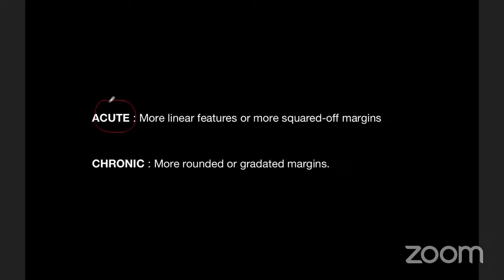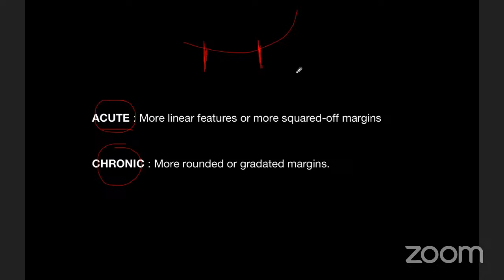Acute versus chronic: acute injuries to cartilage usually have very linear margins — a clear fracture-like defect line. If you see linear, clear defect lines, this indicates an acute injury. However, if the morphology is rounded with a gradation from completely lost to thin to thicker, this indicates a process happening over years — a chronic finding.